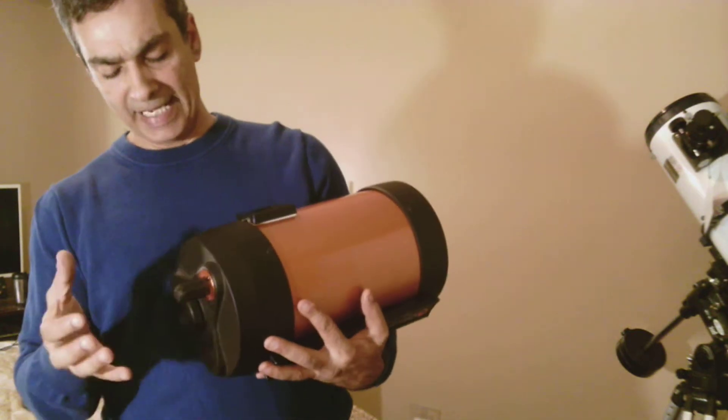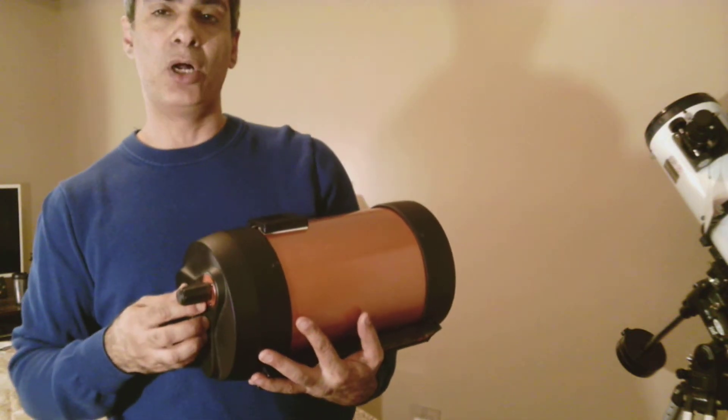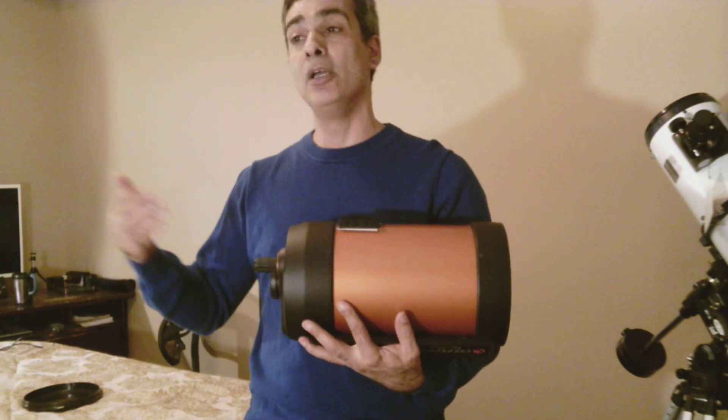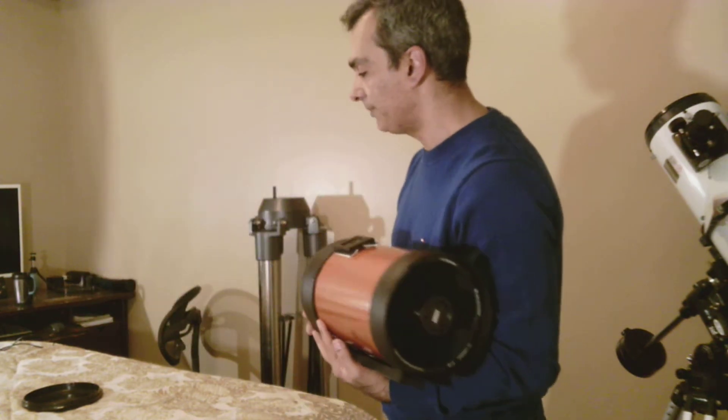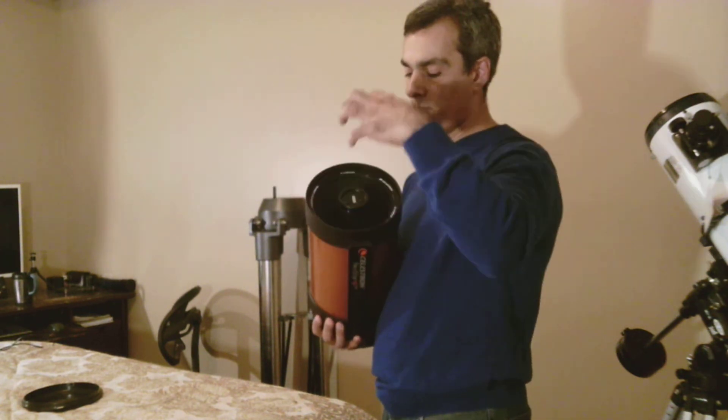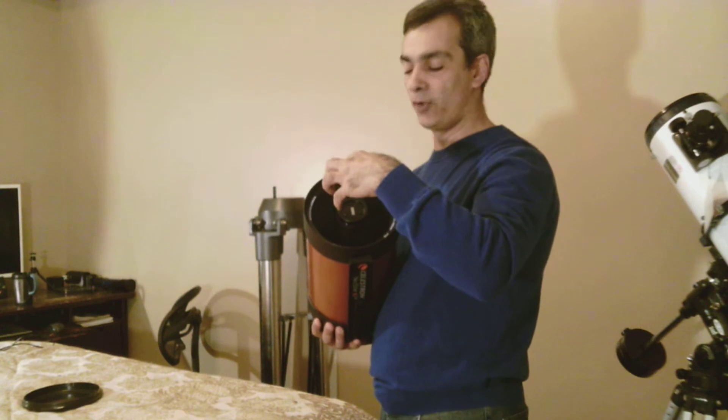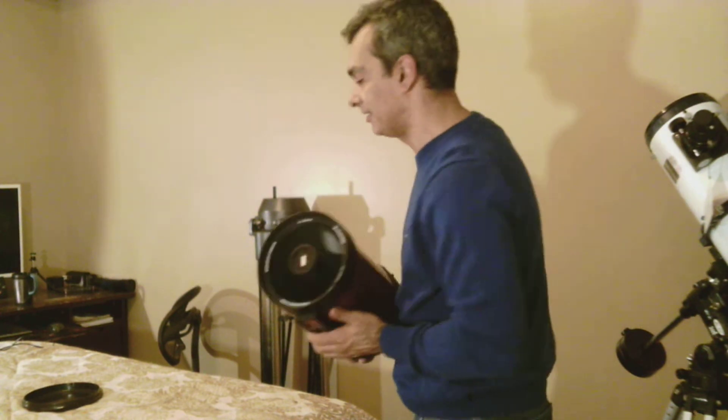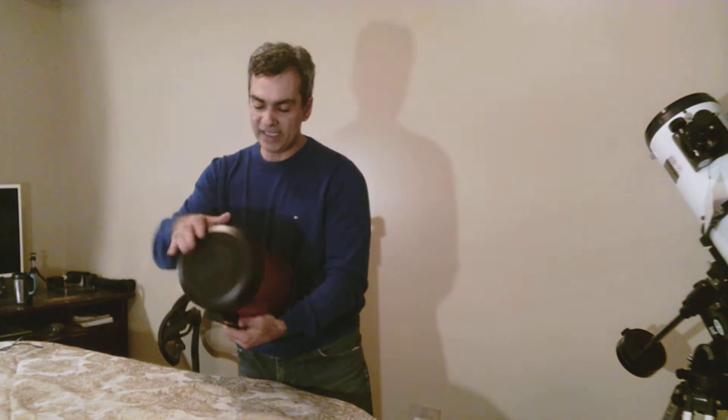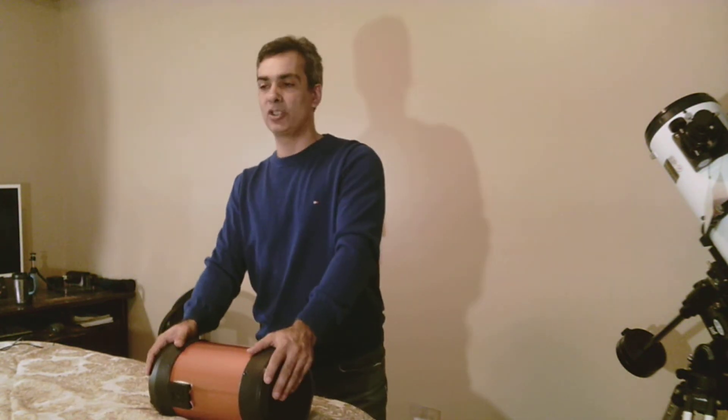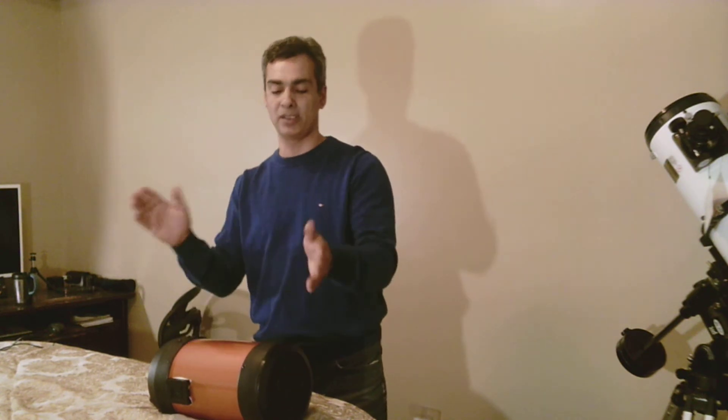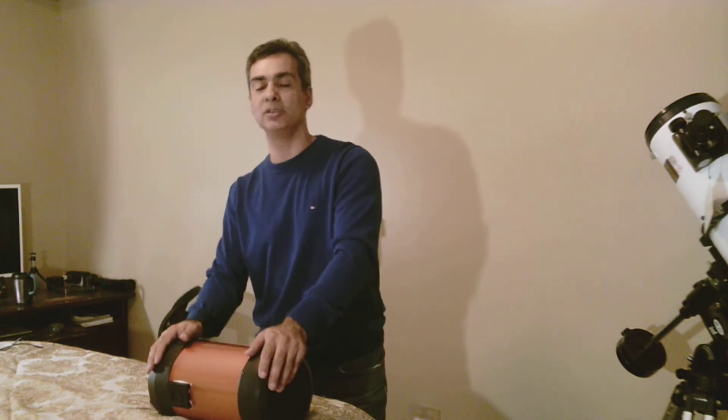You could also add a focal reducer on these SCTs, making them, instead of an F10, F6.3, which is great for astrophotography. Some of them have a Fastar system where you could put your camera right on the front, making it an F2 system for astrophotography. Meade, at one time, made the 8-inch, which was the best selling size, Celestron as well.